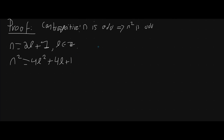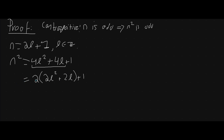Now we want to show that this is odd. We factor out a 2 from the first two terms and keep the 1 at the end. So we get 2(2l squared plus 2l) plus 1. Let's check: 2 times 2l squared is 4l squared, 2 times 2l is 4l, plus 1. Yes, that gives us 4l squared plus 4l plus 1.